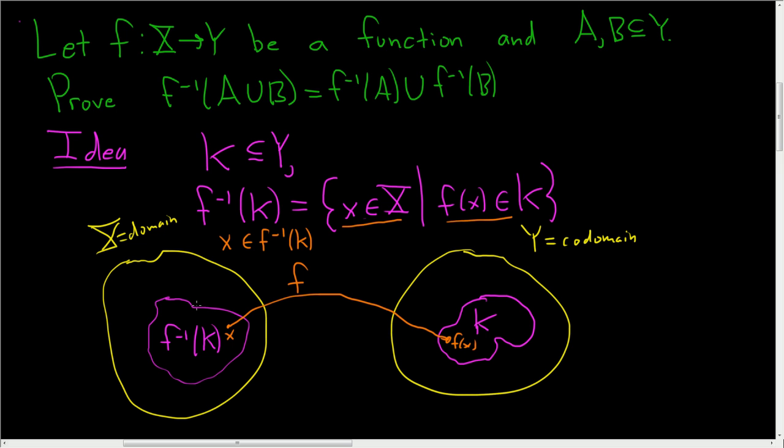So it's all of the X's in the domain that gets sent to K. So if I take another value here, which we'll call it A, it'll get sent to F of A, etc.